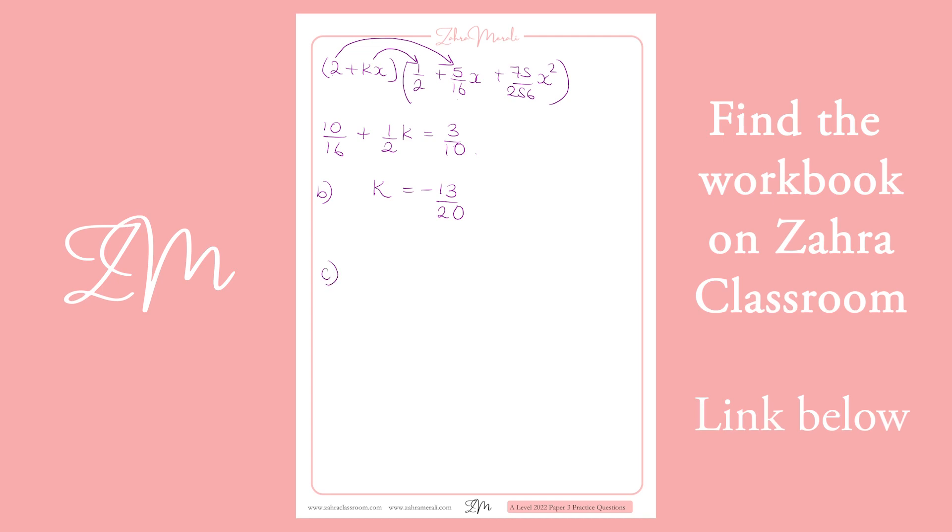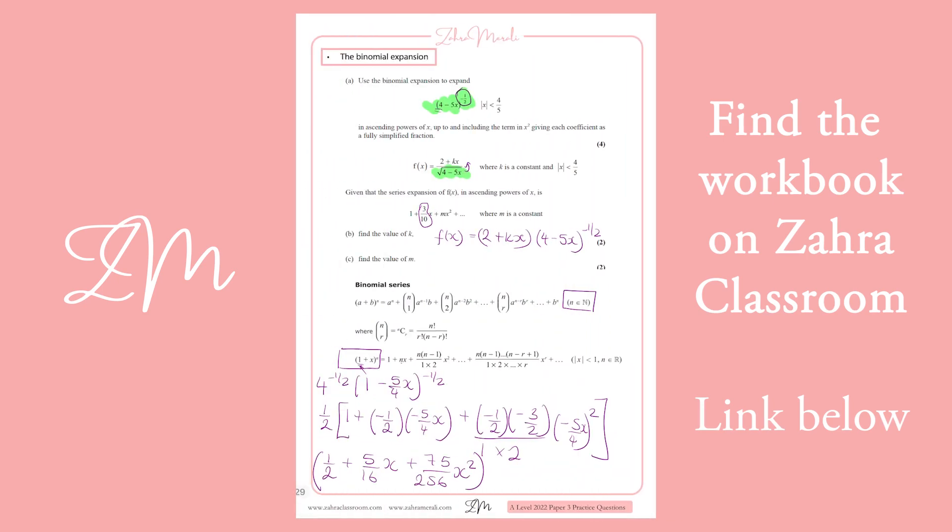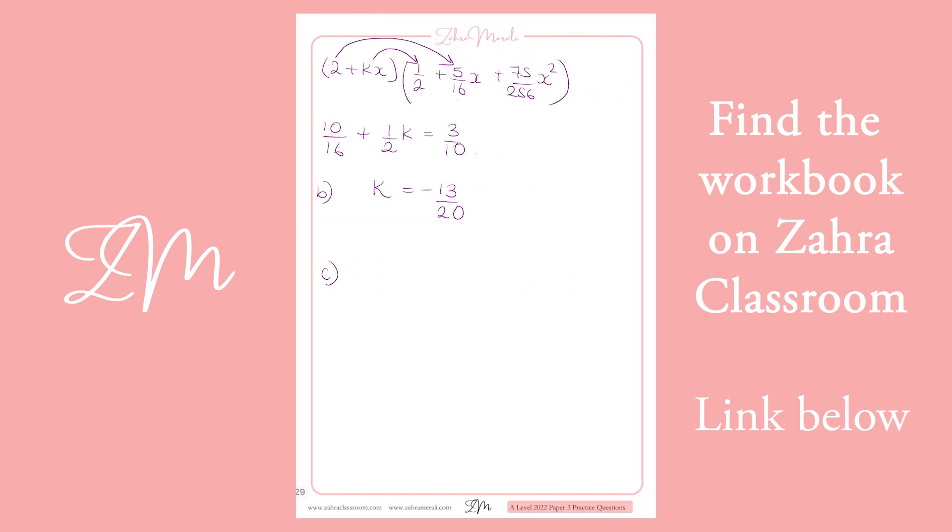So that's part b. And then part c asks you to find m, which is the x squared terms. So how do we get x squared? x squared is going to be x times x, so we need this one, and 2, which is nothing, times that.